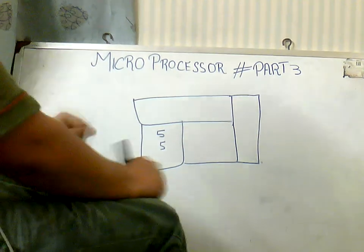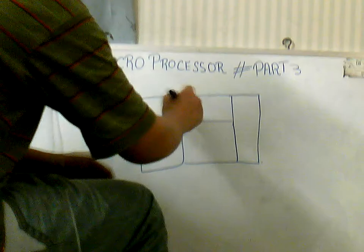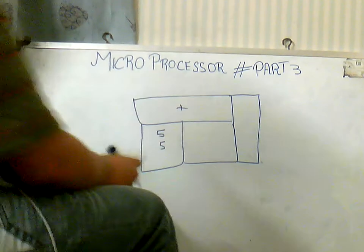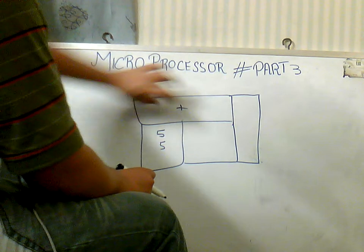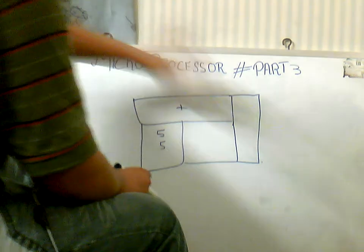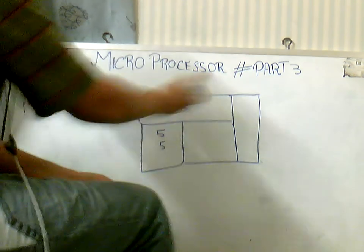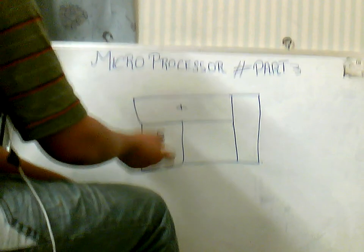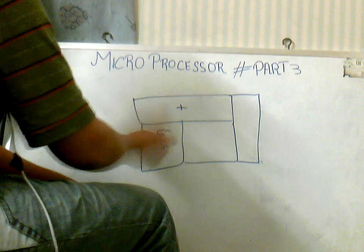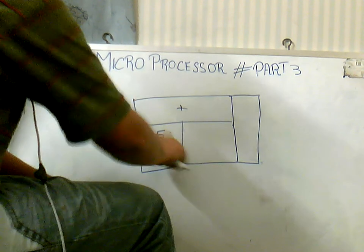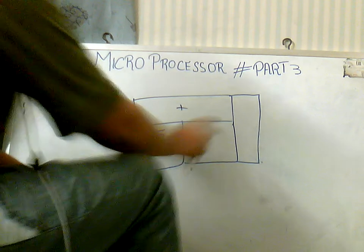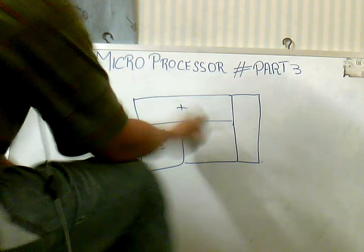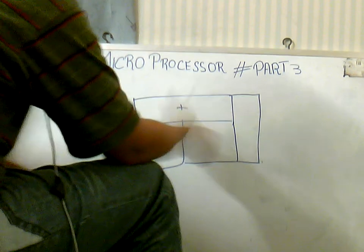For example, five and five is stored in the data register, and a plus sign is present over here. What will happen? The accumulator will call five to the ALU — that is the arithmetic logic unit. Now the data register will be confused about which five to send.